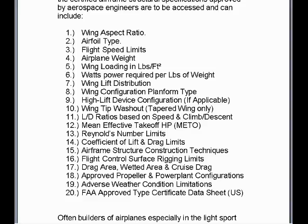Wing tip washout for tapered wings only, lift to drag ratios based on speed and climb/descent, mean effective takeoff horsepower, Reynolds number limit, coefficient of lift and drag limits, airframe structure construction techniques, flight control surface rigging limits, drag area, wetted area, and cruise drag, approved propeller and power plant configurations, adverse weather conditions, and finally FAA approved type certificate data sheets if in the United States. This list I put together are the basic minimum 20 points for evaluating the specifications required when picking a certain airplane application.